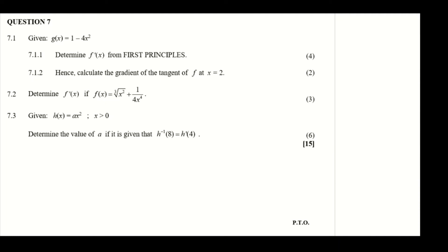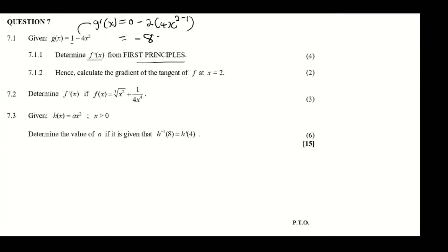We're doing question 7. We are given the equation g(x) = 1 minus 4x squared, and we are asked to determine the derivative using first principles. Before using first principles, let's find the derivative using standard rules so we know what answer to look for. The derivative of 1 is 0, then we drop the 2: 4 multiplied by x to the power 2 minus 1 gives minus 8x. So the derivative we're looking for using first principles is minus 8x.